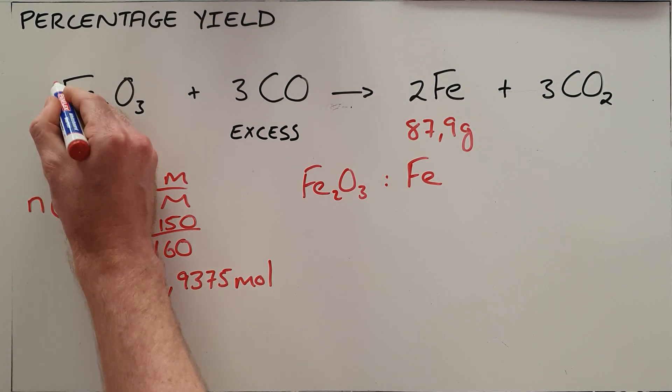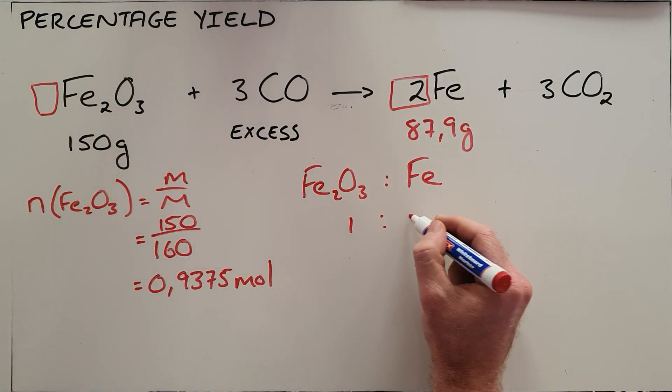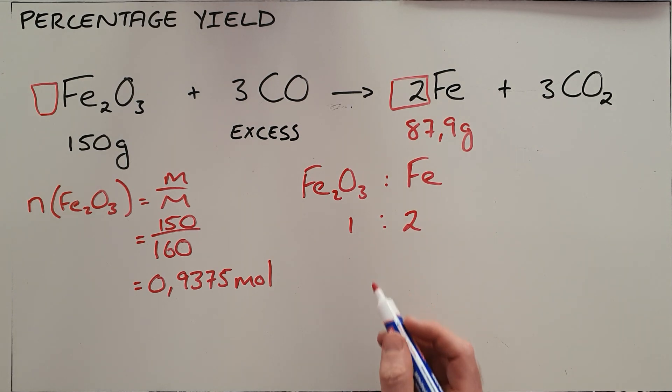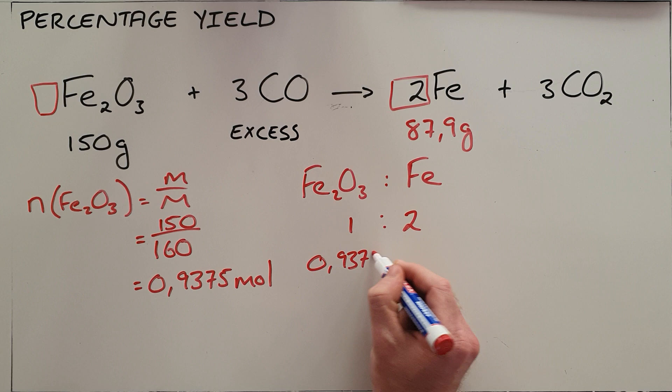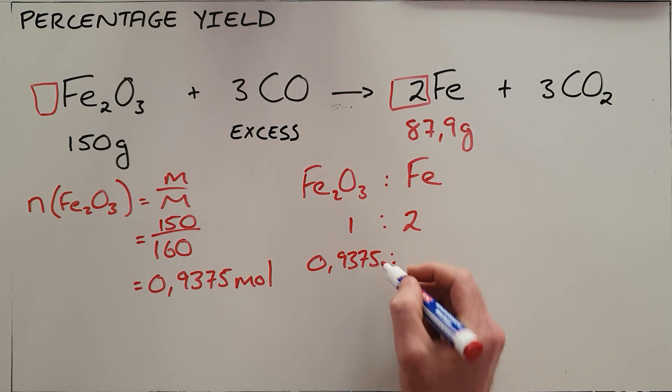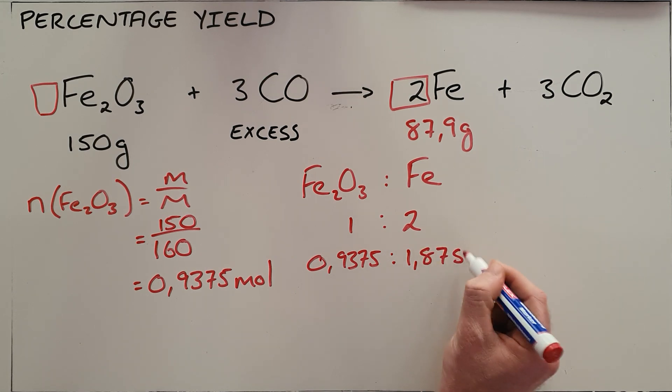We can see from the coefficients in the balanced equation that the ratio there is one to two, meaning that since we start with 0.9375 moles of iron oxide, we would multiply that by two to find that we expect to end up with 1.875 moles of iron.